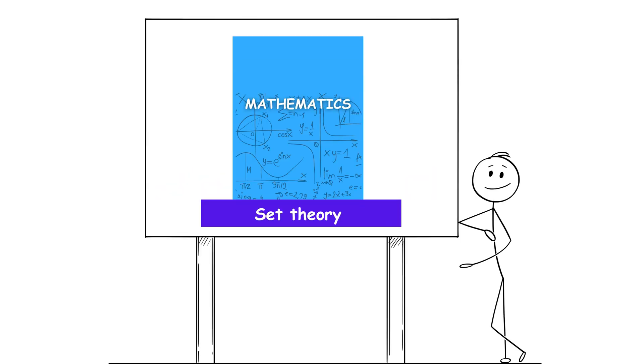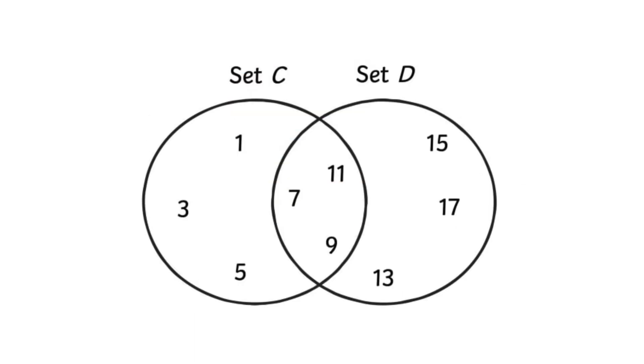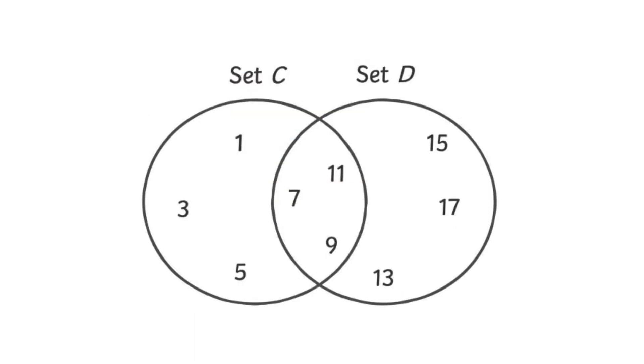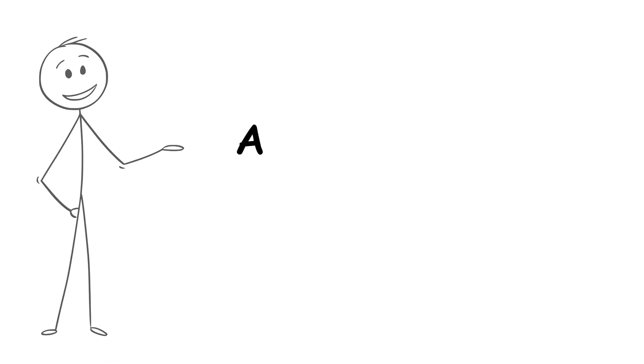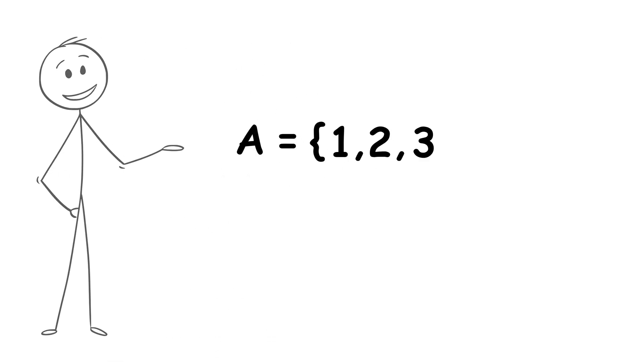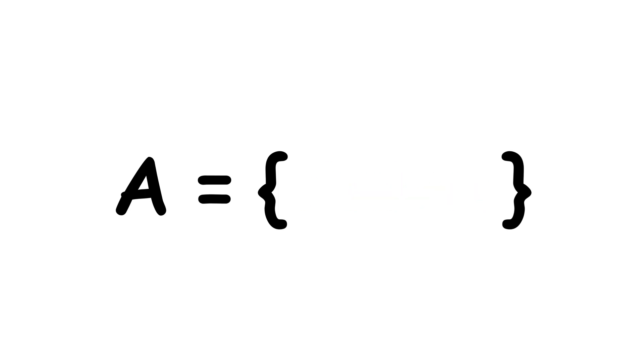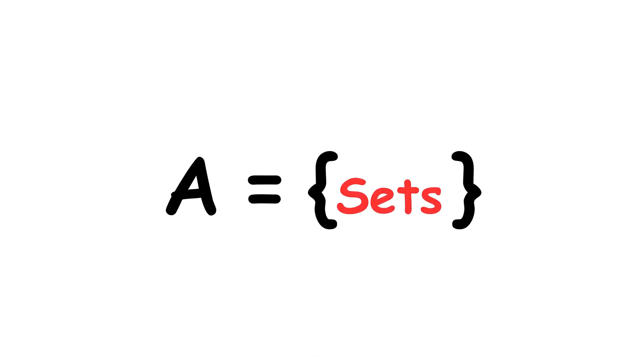Set theory is the fundamental language of mathematics, as it describes and organizes collections of objects called sets. A set is usually denoted with braces. For example, A equals 1, 2, 3. Its elements can be numbers, points, objects, functions, or even other sets.